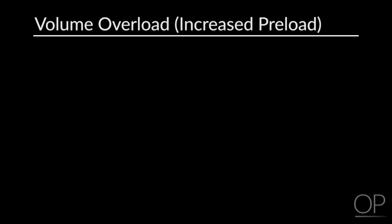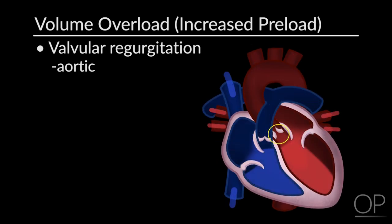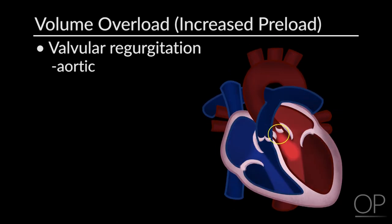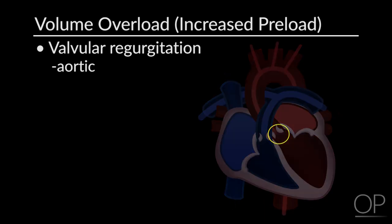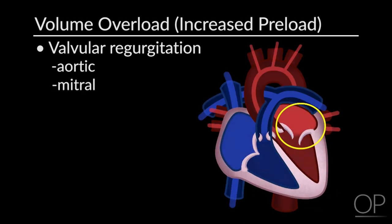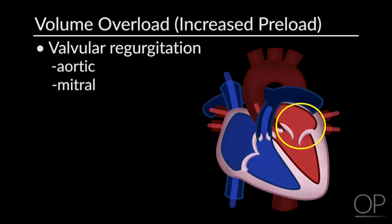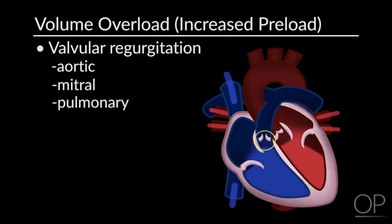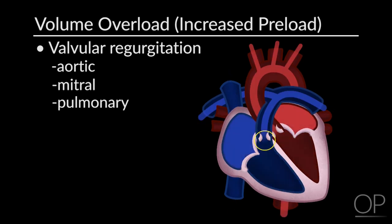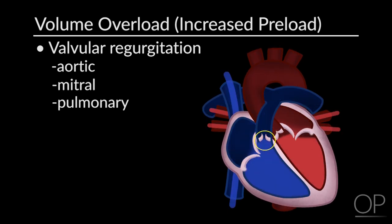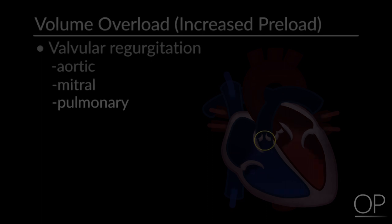Another cause of volume overload is valvular regurgitation. This occurs in the setting of aortic regurgitation, mitral regurgitation, and pulmonary regurgitation, where there is increased volume that goes backwards back into the ventricle.